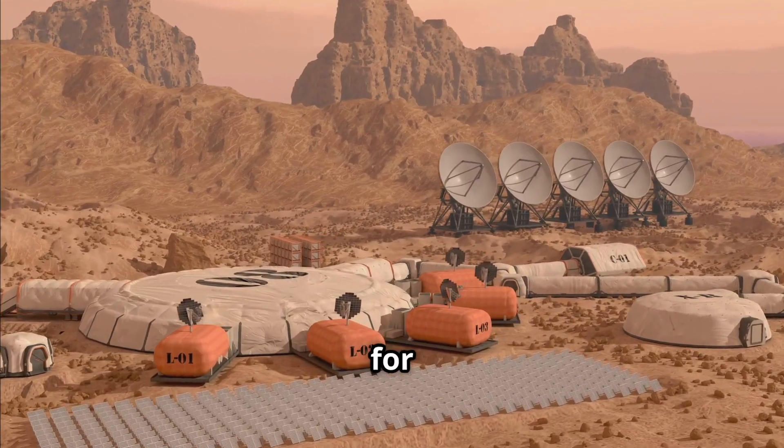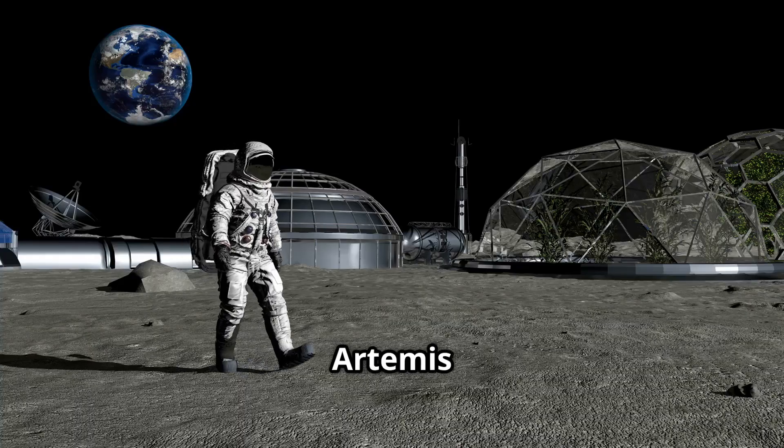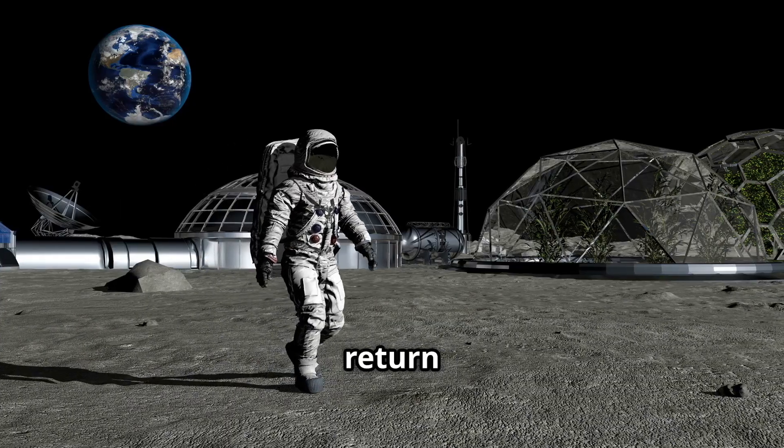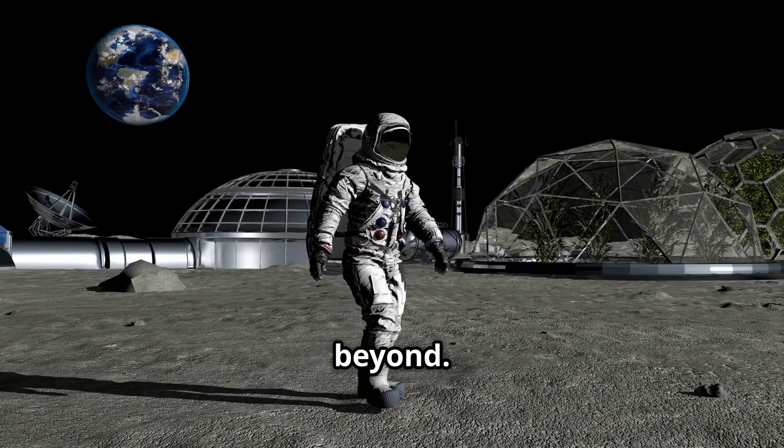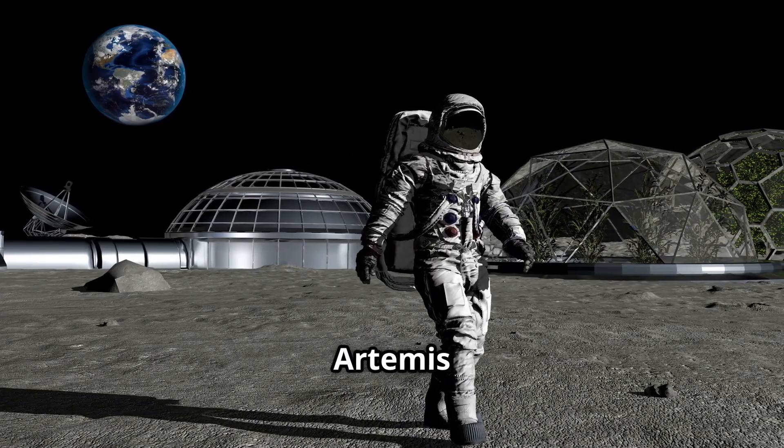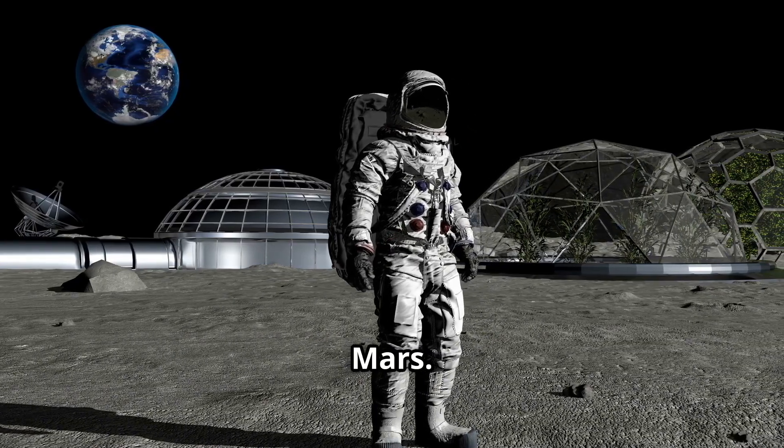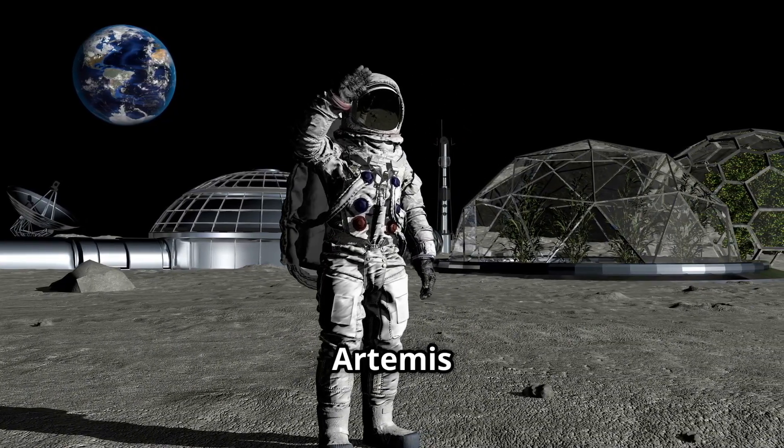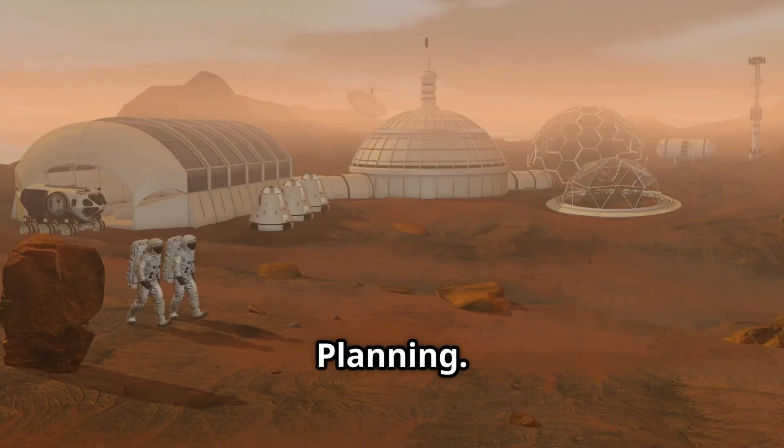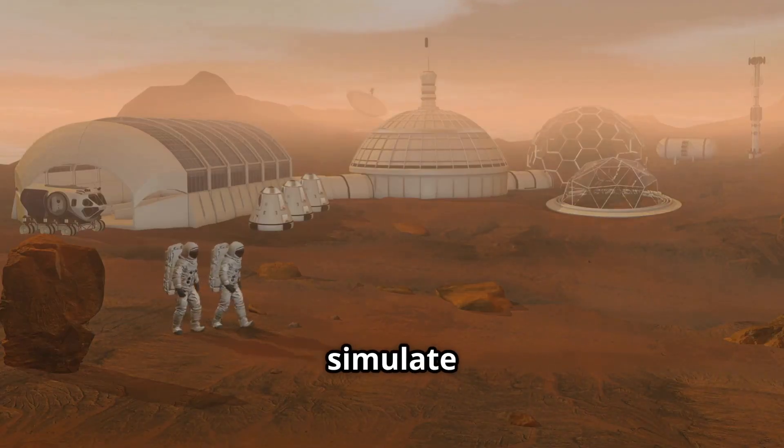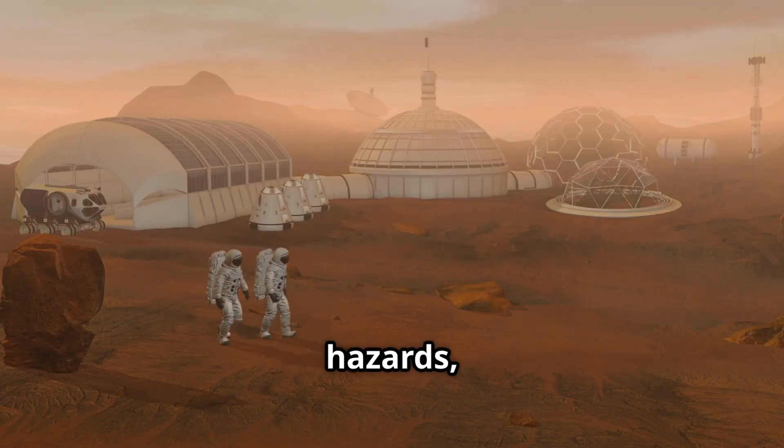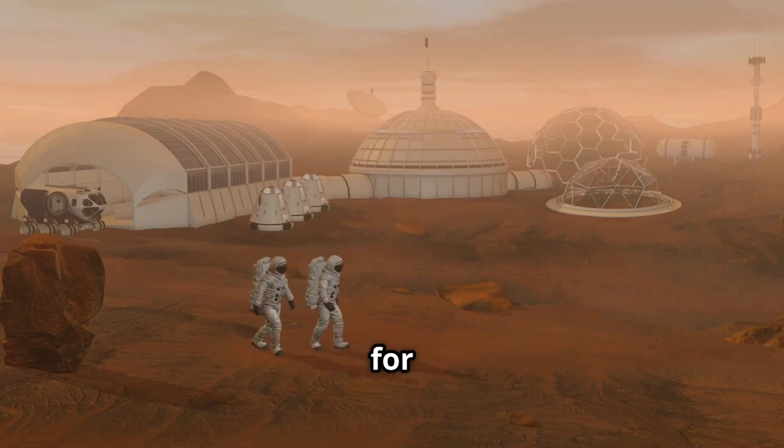The Artemis program is NASA's bold initiative to return humans to the moon and beyond. But it's not just about planting flags—Artemis is a proving ground for the technologies that will eventually take us to Mars. AI is deeply embedded in Artemis missions. Smart mission planning: AI is used to simulate landing trajectories, predict hazards, and select optimal sites for lunar bases. It also manages system redundancies and fault tolerance, identifying potential failures before they happen.